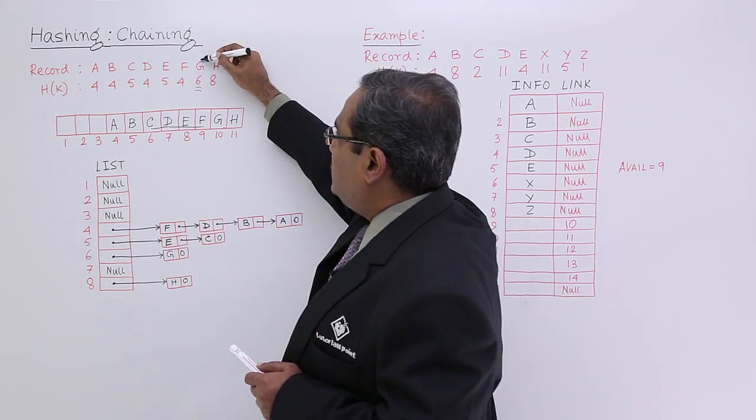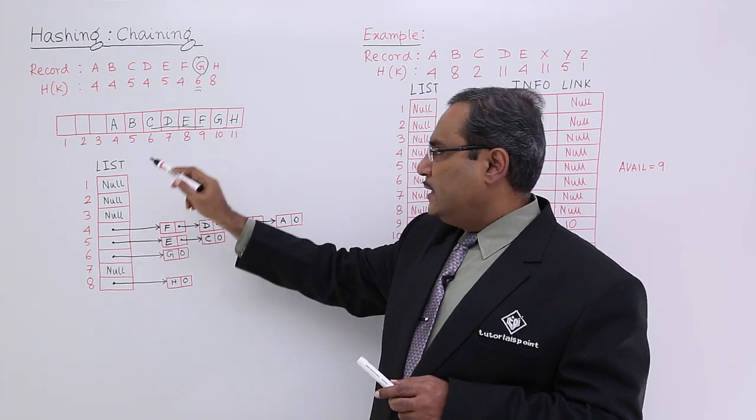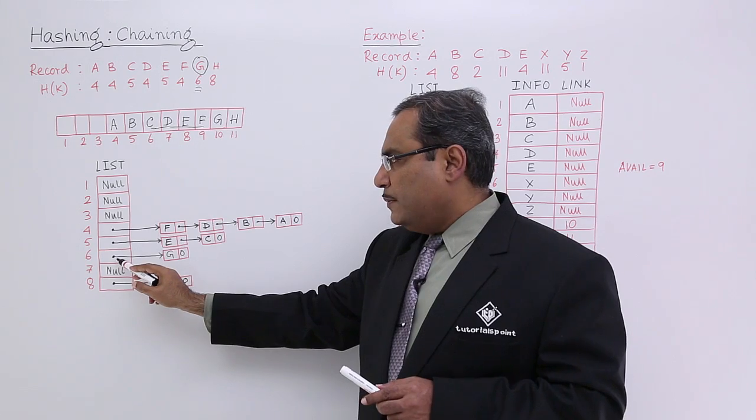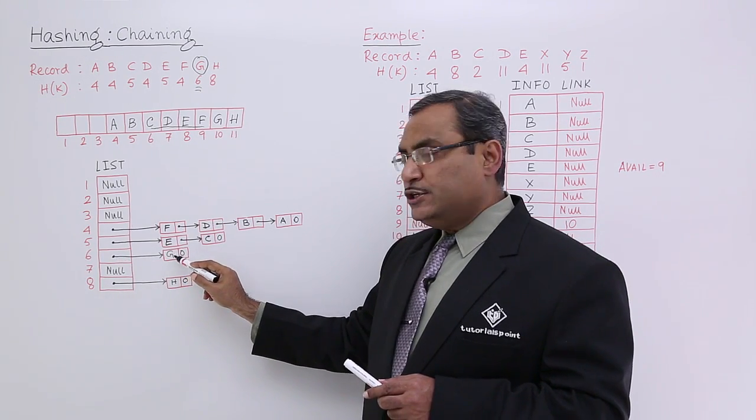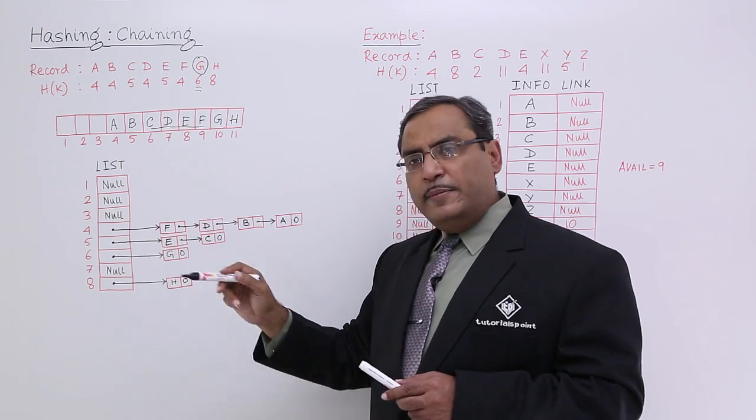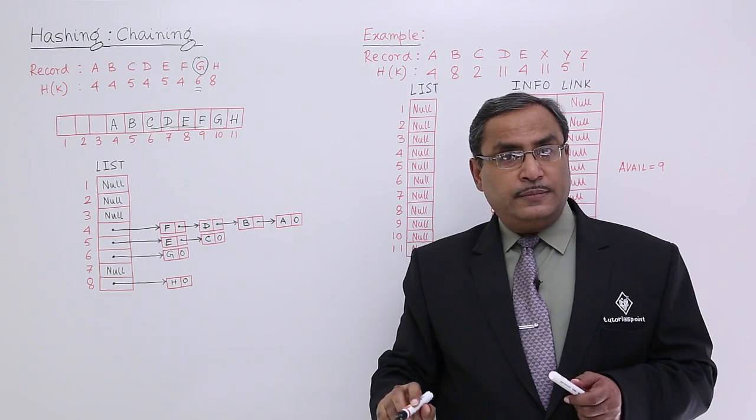Now let us again search for G. G is having the H of K 6. So I shall be coming to the 6th location and here I am getting one starting address of the linked list and reaching to this particular node. At the info I am getting G. So using a single search, I can get G.